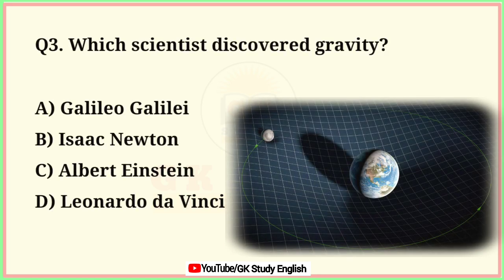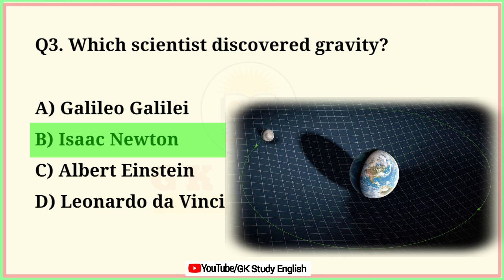Question number 3. Which scientist discovered gravity? A. Galileo Galilei. B. Isaac Newton. C. Albert Einstein. D. Leonardo da Vinci. Correct answer is option B. Isaac Newton.